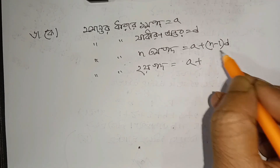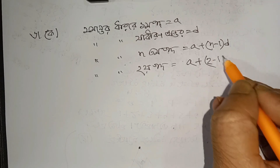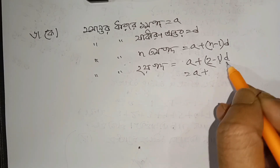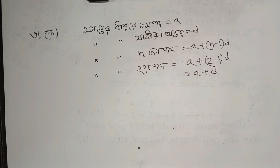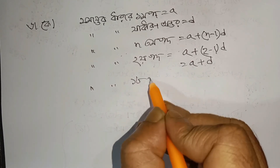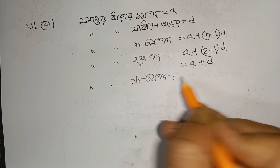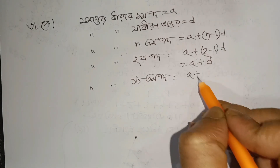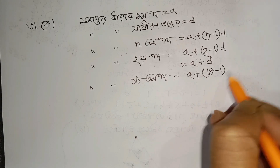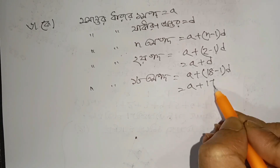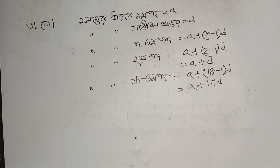So a plus 2 minus 1 into d, so a plus d. So a plus 18 minus 1 into d equals 27, so 27d.